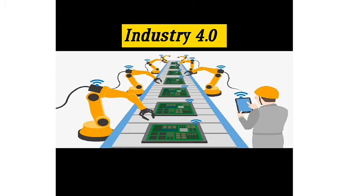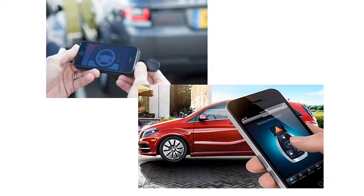In the fourth revolution: mobile technology, machine-to-machine, 3D printing, advanced robotics — this is the main focus of Industry 4.0. In short, Industry 4.0 is not dependent on humans. For example, a car is an automatic car — you can operate the car from your phone. This is the technology of the fourth industrial revolution.